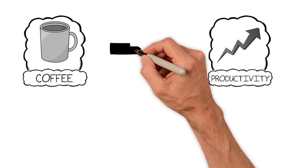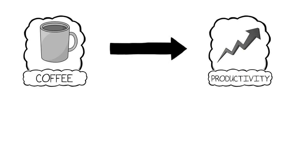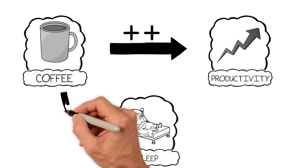Second, users define the relationship between these components. Does coffee increase or decrease productivity? And by how much? The models can get complicated.